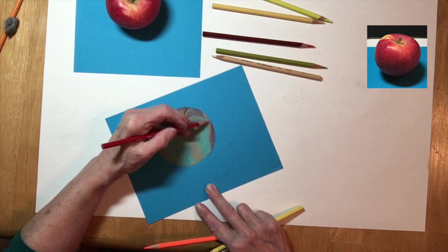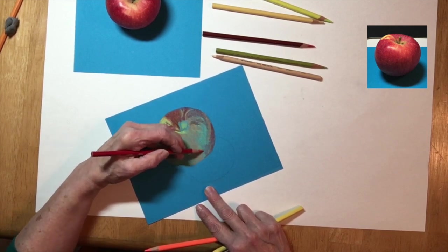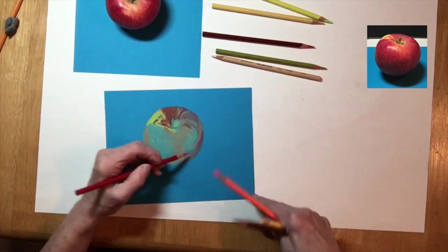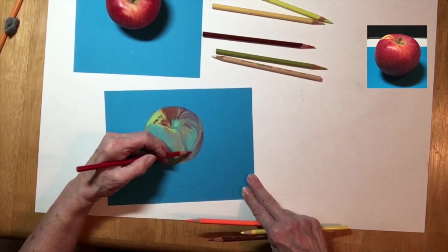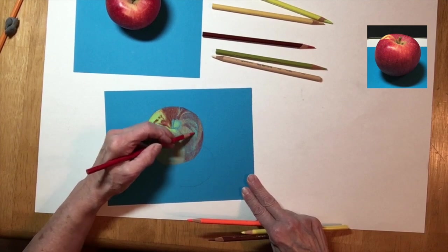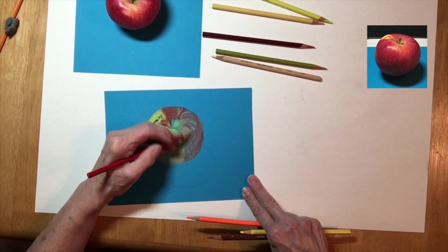I have the paper's width and length, so the best way for me to make it look three-dimensional is to keep in mind that the apple has contour. As I apply the color, I'm trying to pay attention to that.